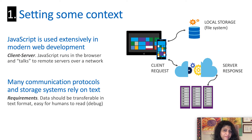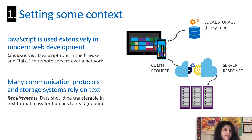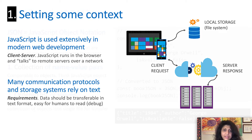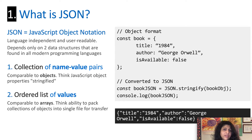First, I want to set some context for why JSON is useful. It turns out that JavaScript is actually used extensively in web development today, where you have client-server applications. You might also be familiar with its use in Node, where you have many cases where you need to read and write data from the file system. Both communication protocols and file transfer protocols tend to rely on text-based formats for data transfer.